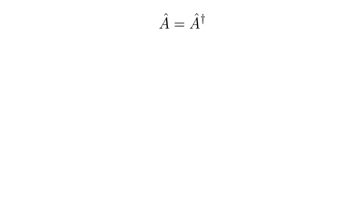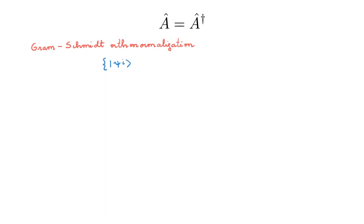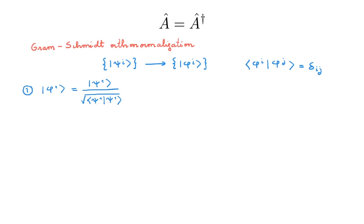What I want to show next is how we can make all these states mutually orthogonal to get an orthonormal basis for state space. Since any linear combination of eigenstates in an n-fold degenerate subspace gives another eigenstate with the same eigenvalue, we can always build a new set of mutually orthogonal eigenstates by making linear combinations of them. The process is called Gram-Schmidt orthonormalization. I will call the original linearly independent states psi_i and the new orthonormal set phi_i. The first step is to pick phi_1 as proportional to psi_1, with the proportionality constant chosen to normalize the state.